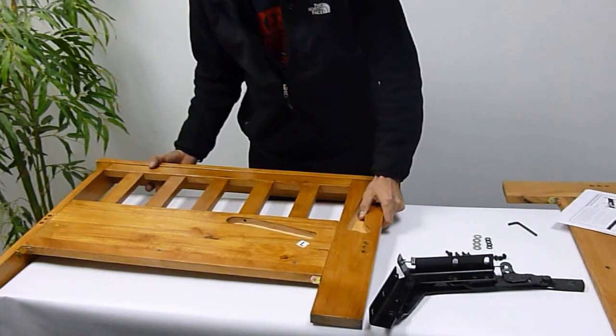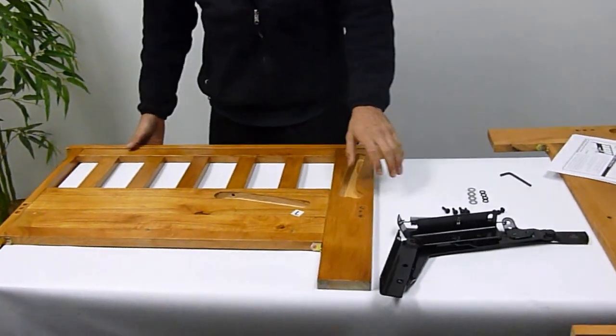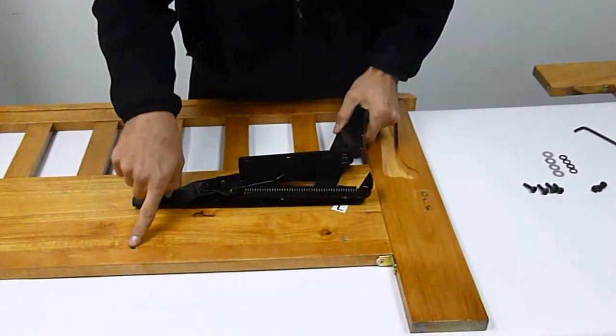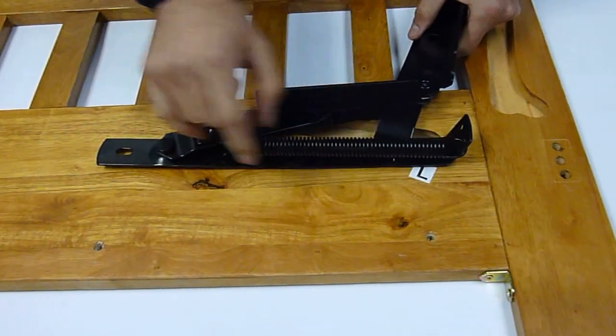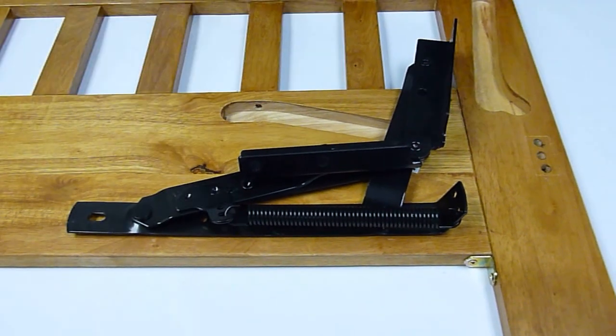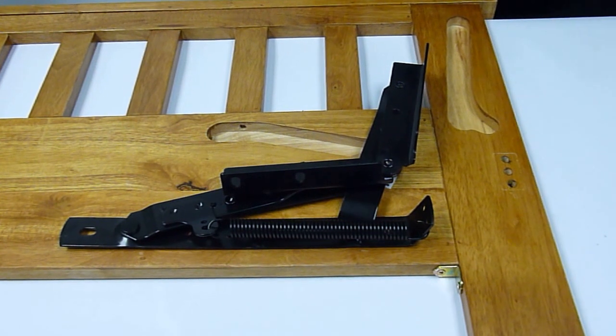I'm going to be doing this backwards so you guys can all see. First off, we're going to take our hinge A and place it over the holes which are located on the arm. Just like that. Make sure the holes line up. Now, just as the instructions state,